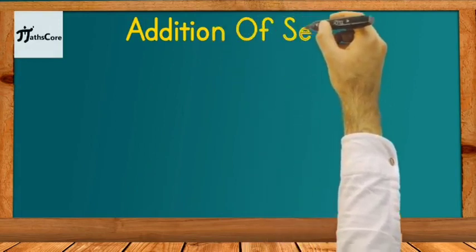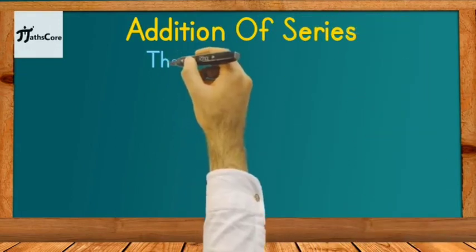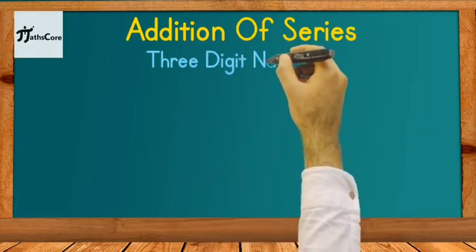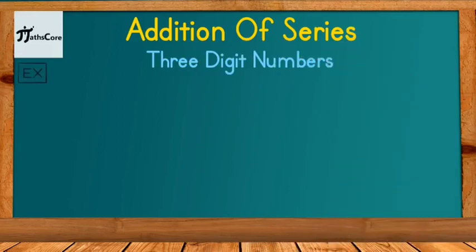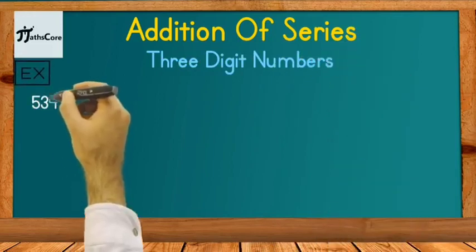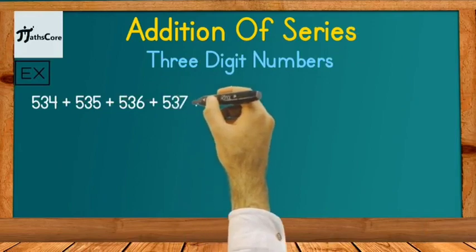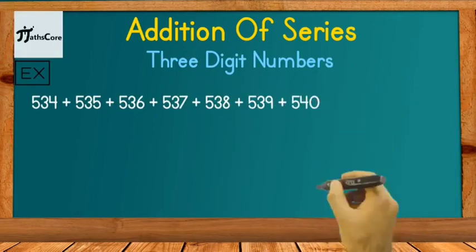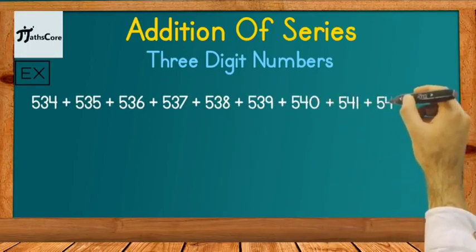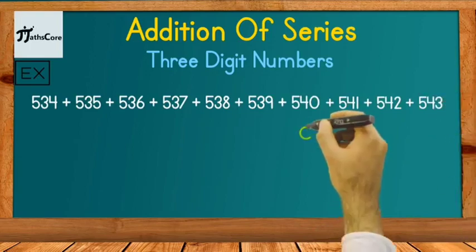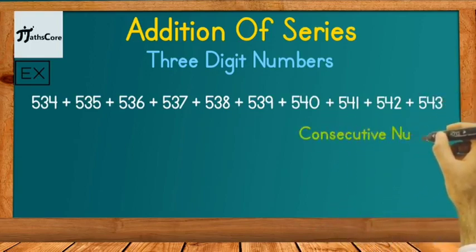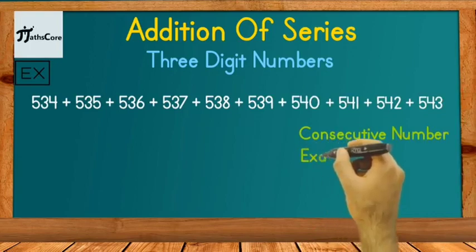Let's solve one more example on addition of series. Here we have taken example of 3 digit number. Example is 534 plus 535 plus 536 plus up to 543. If you observe this series then you can understand all numbers are consecutive numbers and exactly 10 numbers are given in this series.